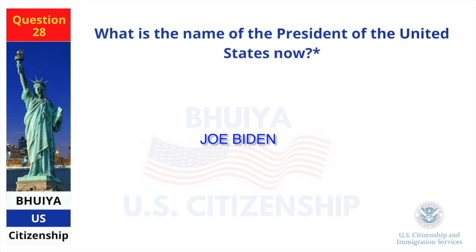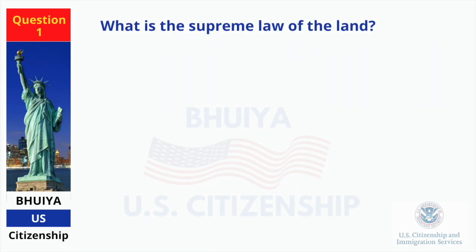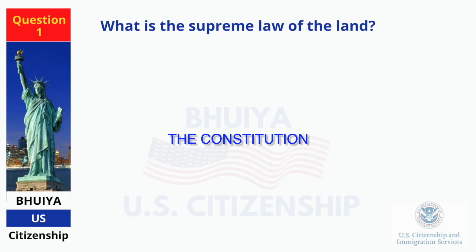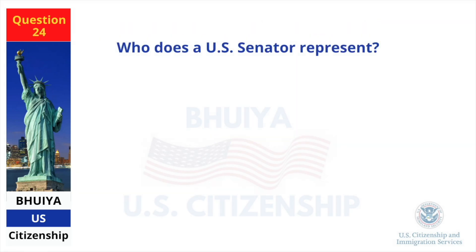What is the name of the president of the United States now? Joe Biden. What is the supreme law of the land? The Constitution. Who does a US senator represent? All people of the state.